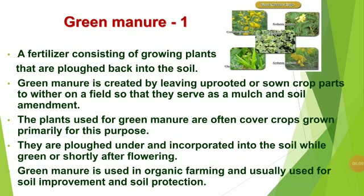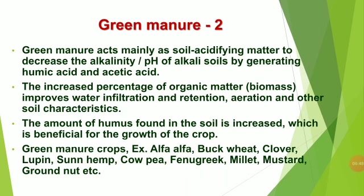Green manure is a fertilizer consisting of growing plants that are plowed back into the soil. Green manure is created by leaving uprooted or sown crop plants to wither on a field so that they serve as a mulch and soil amendment. The plants used for green manure are often cover crops grown primarily for this purpose, plowed under and incorporated into the soil while green or shortly after flowering. Green manure is used in organic farming for soil improvement and soil protection. It acts mainly as a soil acidifying agent to decrease the alkalinity or pH of alkali soils by generating humic acid and acetic acid.